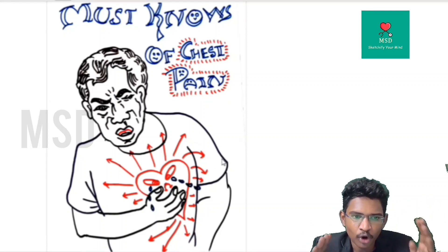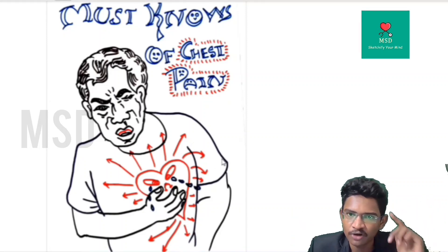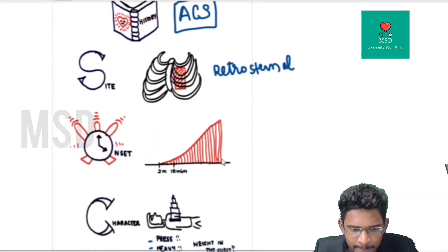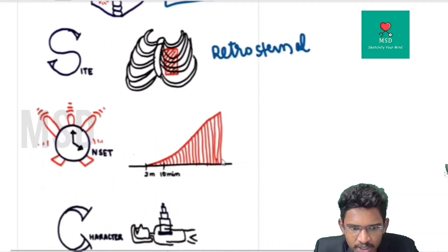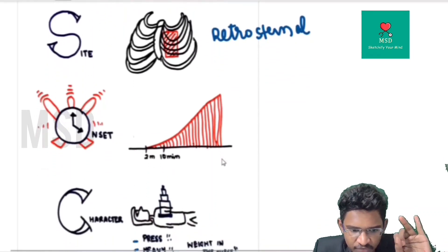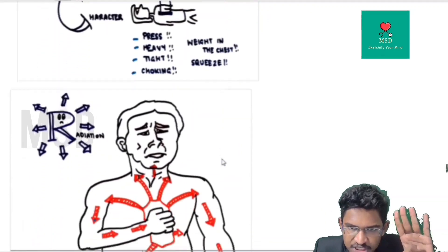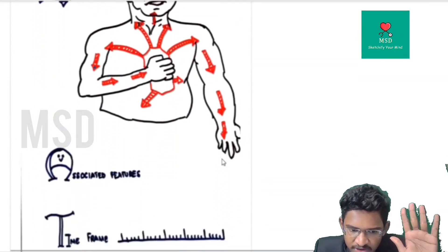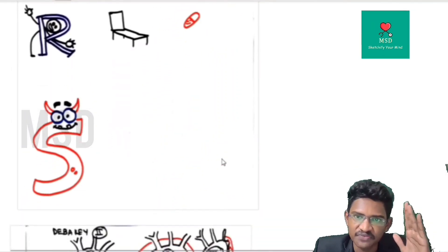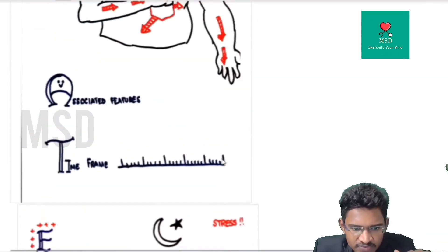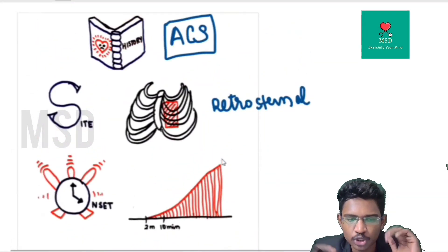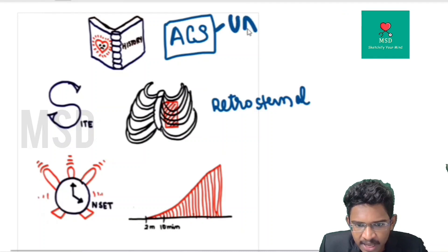We will be discussing cardiovascular causes of chest pain initially, followed by non-cardiac causes. First, how to take a proper history in a case of chest pain. The mnemonic we follow is SOCRATES: S for Site, O for Onset, C for Character, R for Radiation, A for Associated features, T for Time frame, E for Exaggerating and relieving factors, and S for Severity.